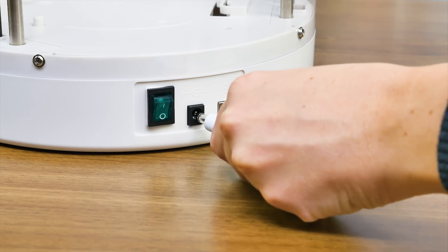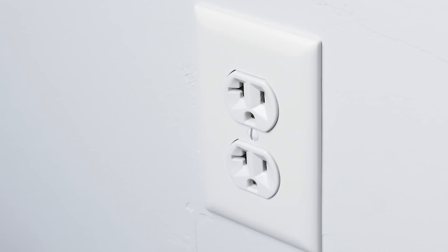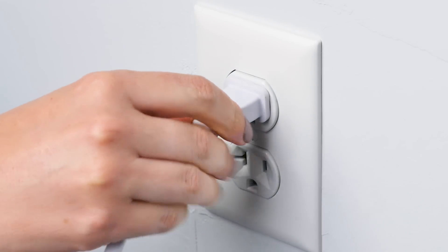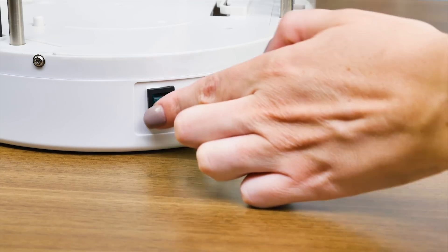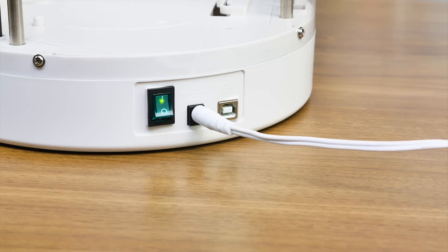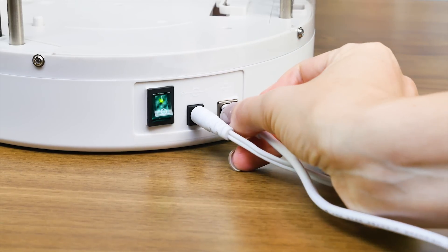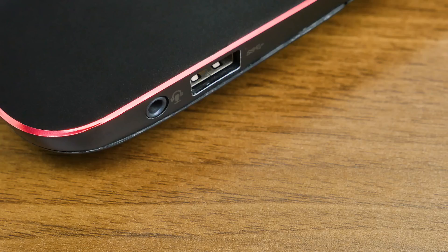Plug the included AC adapter into the right-hand side of the Alta and then into a wall socket. Then connect the Alta to your computer using the provided USB cable.